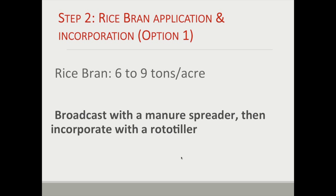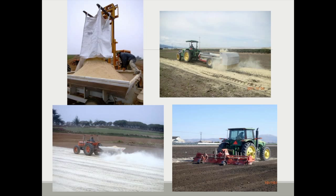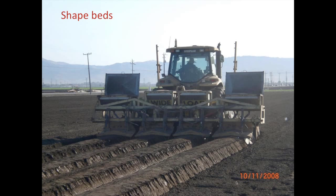We recommend applying rice bran at six to nine tons per acre. Most growers broadcast it with a manure spreader and then incorporate it with a rototiller or other equipment to get incorporation ideally down six to twelve inches. This shows examples of different manure spreaders being used to spread the rice bran and then incorporating it after it's been spread across the field. Then we come through and shape the beds, and in doing that, the rice bran gets evenly distributed throughout the bed.